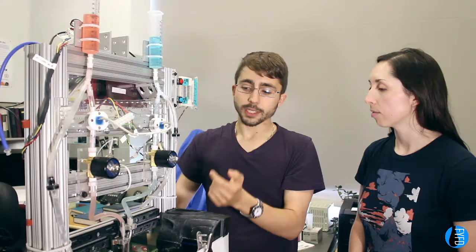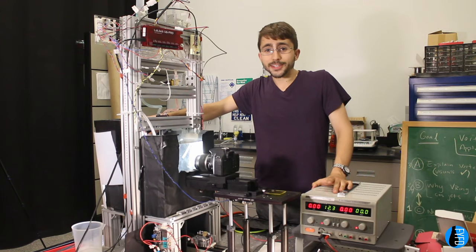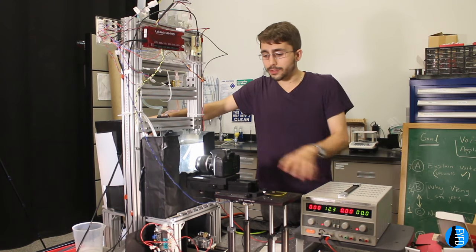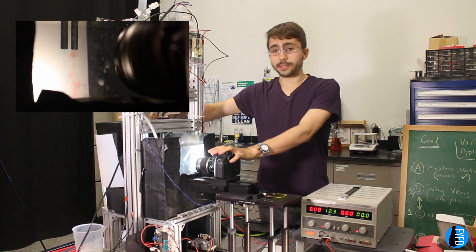When the valves close, the vortex rings stop growing, and they start moving down the tank all on their own. To watch how the vortices interact as they move out of the nozzles, I use the camera here and backlighting on the other side to watch the two different colored jets interact.